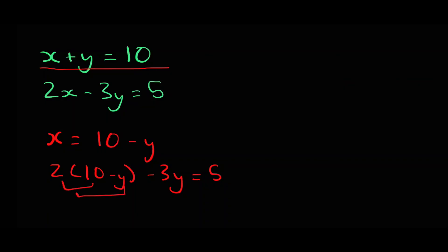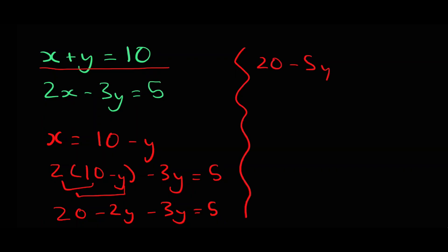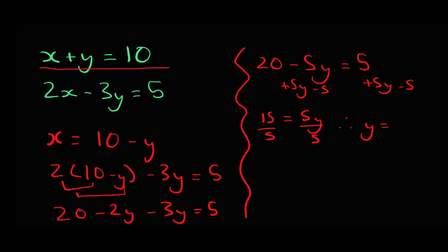Substituting 10 minus y into the second equation we get 2 times (10 minus y) minus 3y equals 5. Then we multiply out the 2 to get 20 minus 2y minus 3y equals 5. Collecting like terms gives 20 minus 5y equals 5. We isolate y by adding 5y to both sides and subtracting 5, which rearranges to 15 equals 5y.